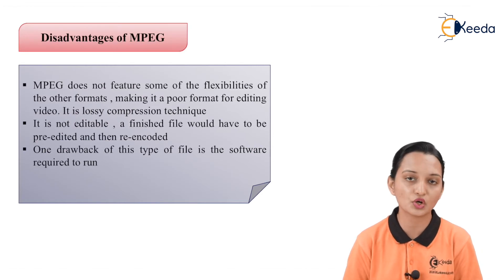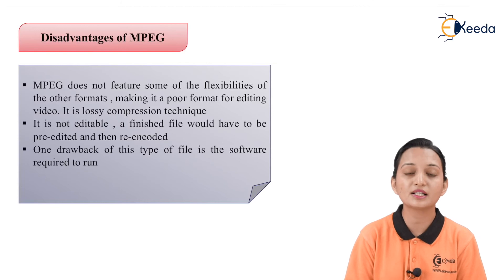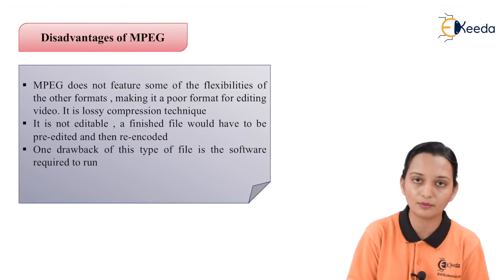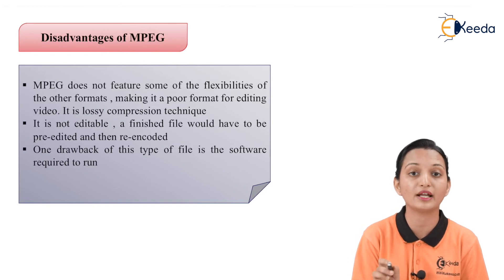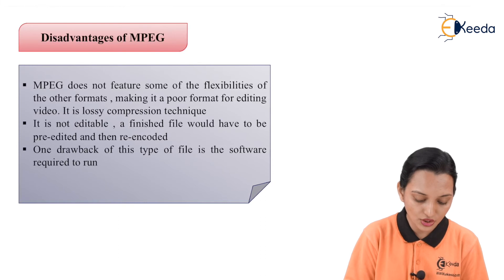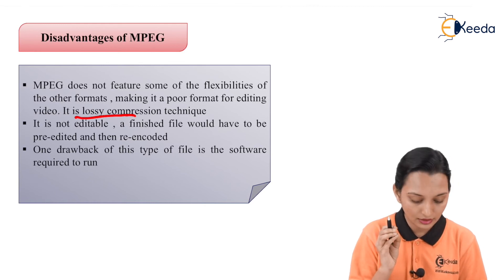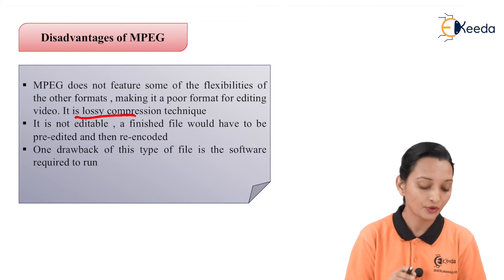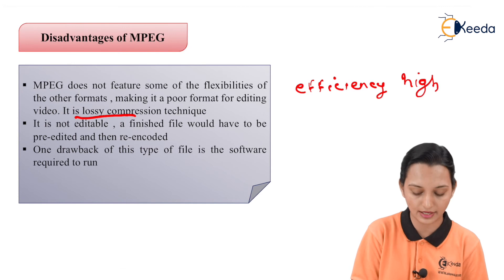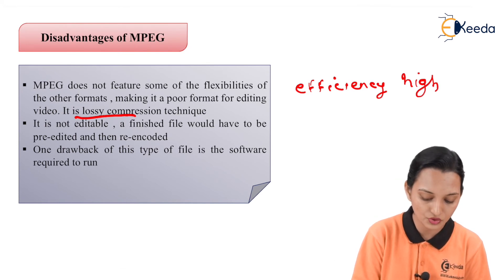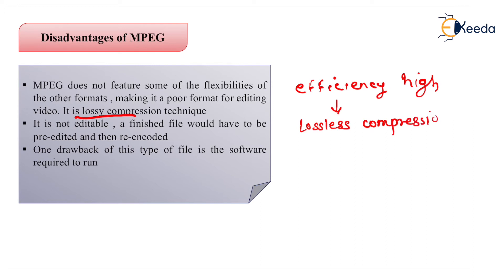Along with the advantages, there are a few drawbacks of MPEG. First, it does not feature the flexibility of other formats, making it a poor format for editing videos. Second, it is a lossy compression technique. To achieve high efficiency, we require lossless compression. Lossless compression means the output after decompression should equal the input exactly — no data is lost.